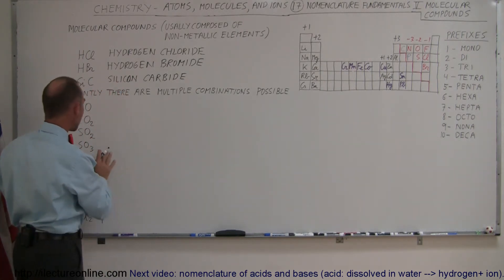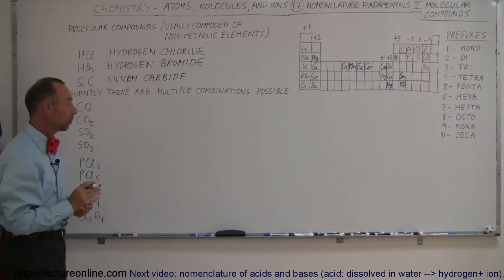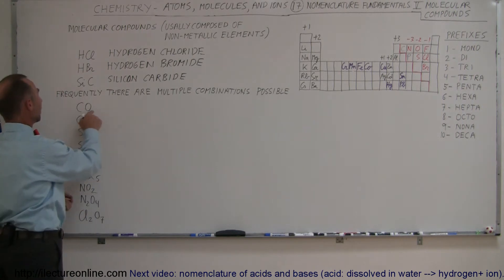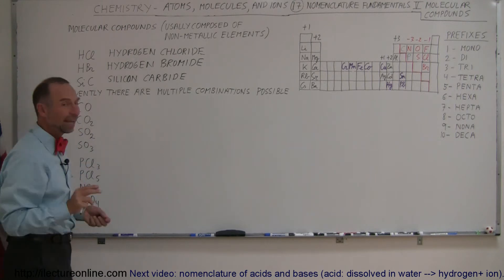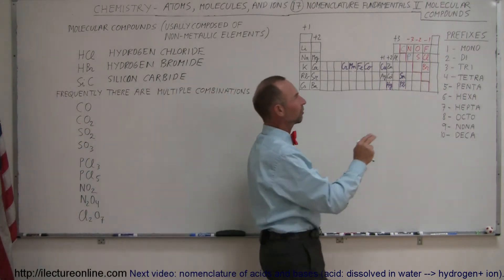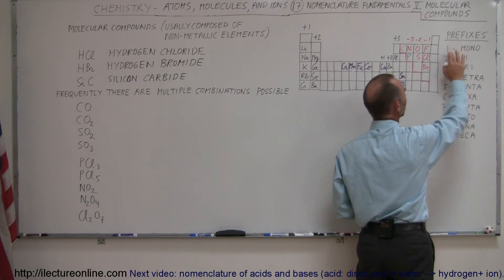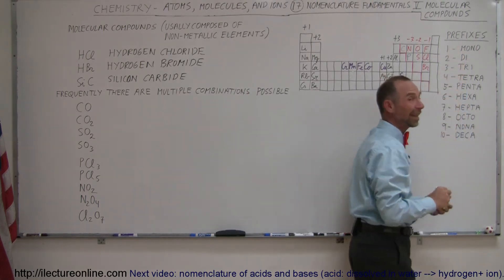But now we have multiple combinations possible. For example, carbon can join with or bond with oxygen in different ways, so we want to differentiate carbon with a single oxygen from carbon with a double oxygen. For that we use what we call these prefixes here—prefixes for the numbers one through ten.